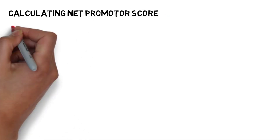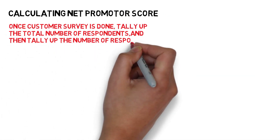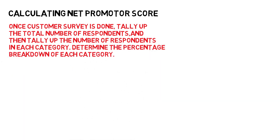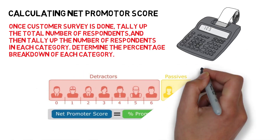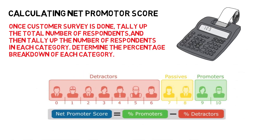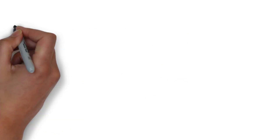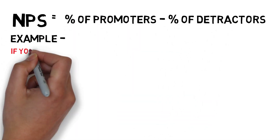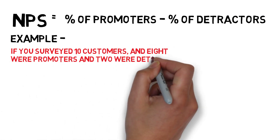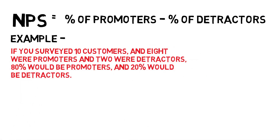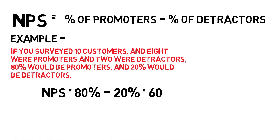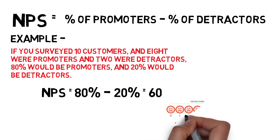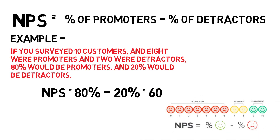The next part is Calculating Net Promoter Score. Once the customer survey is done, tally up the total number of respondents and then tally up the number of respondents in each category. Determine the percentage breakdown of each category. For example, if you surveyed 10 customers and 8 were promoters and 2 were detractors, 80% would be promoters and 20% would be detractors. The formula for your NPS calculation would be: NPS = 80% minus 20% = 60.